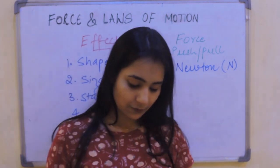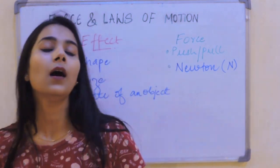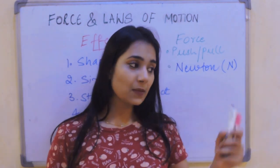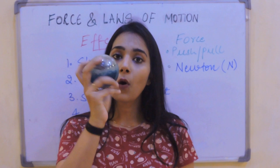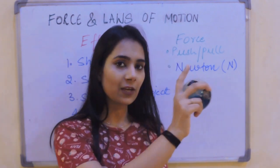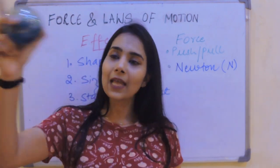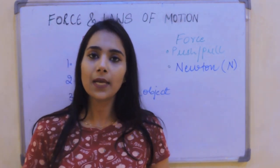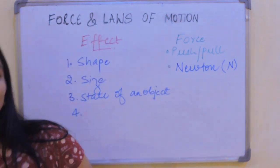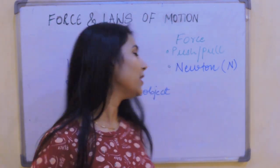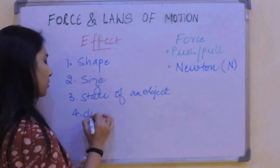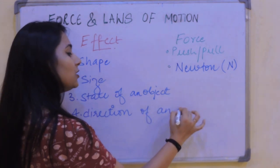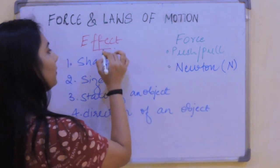Now the next change that force brings: for example, a cricketer is throwing a ball and there is a batsman who will hit it. This ball is going in one direction and when the batsman hits it, it goes in a different direction depending on the angle and the force applied. So this effect of force can also cause a change in the direction of an object.